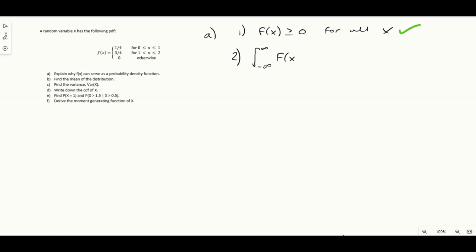The second property of a PDF is that over the full range of values the random variable can take, the PDF should integrate to one. To check this, we need to do some integration. Since the function is piecewise — one quarter for x between zero and one, and three quarters for x between one and two — we need to split into two integrals.